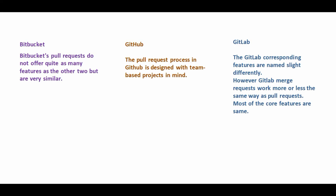Bitbucket's pull requests do not offer quite as many features as the other two, but they are very similar. In the case of GitHub, the pull request process is designed with team-based projects in mind. In the case of GitLab, the corresponding features are named slightly differently — GitLab merge requests work more or less the same way as pull requests. Most of the core features are the same.